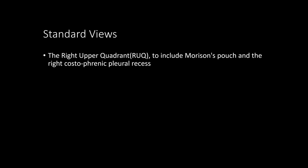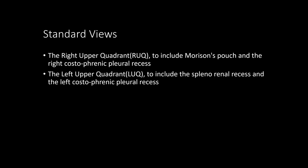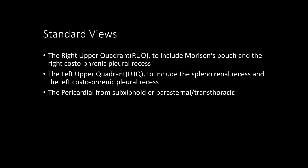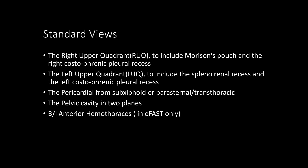Standard views in FAST are as follows: the right upper quadrant (RUQ) to include Morrison's pouch and the right costophrenic pleural recess; the left upper quadrant (LUQ) to include the splenorenal recess and the left costophrenic pleural recess; the pericardial from subxiphoid or parasternal transthoracic; the pelvic cavity in two planes.